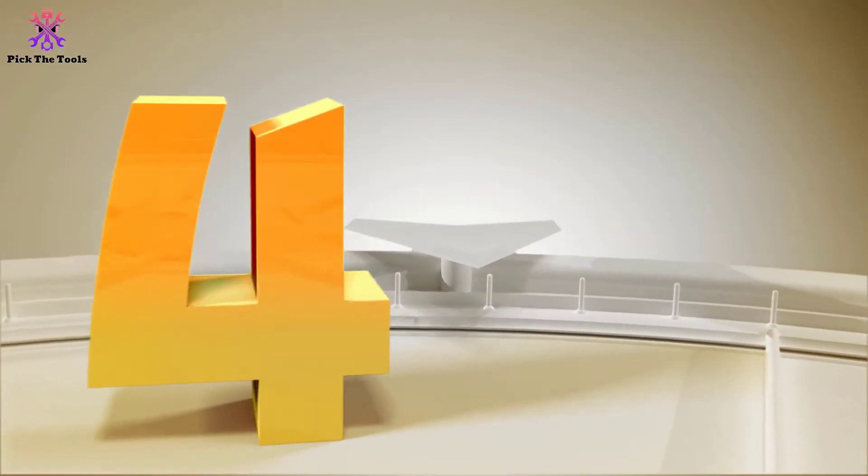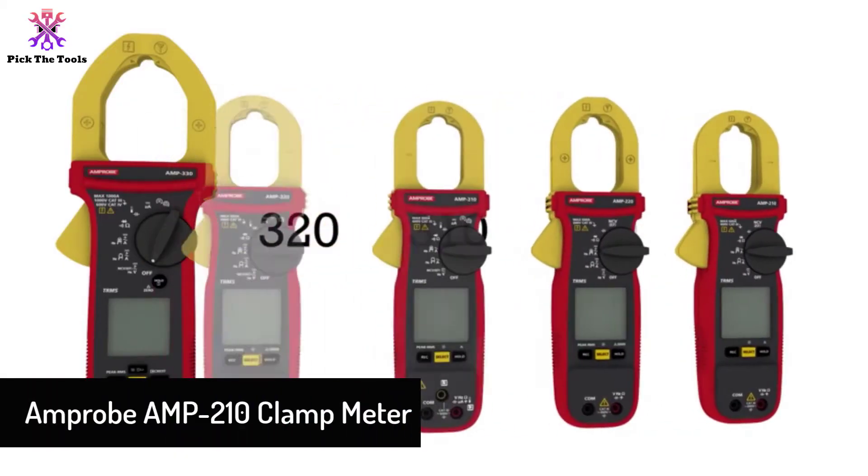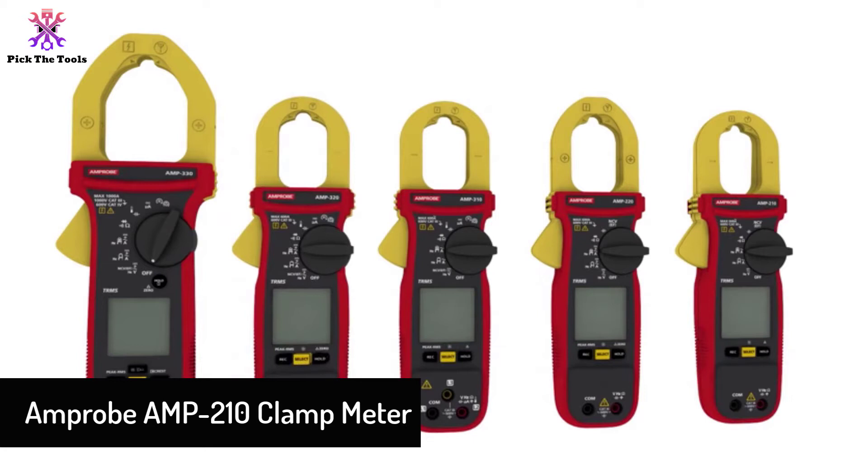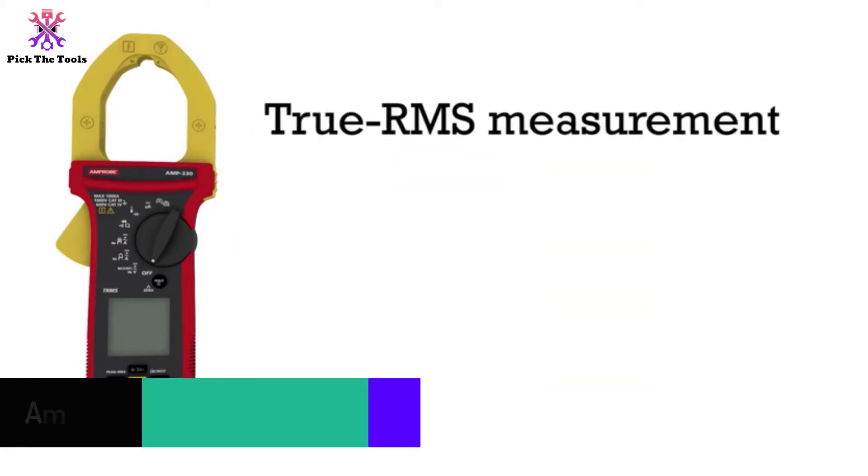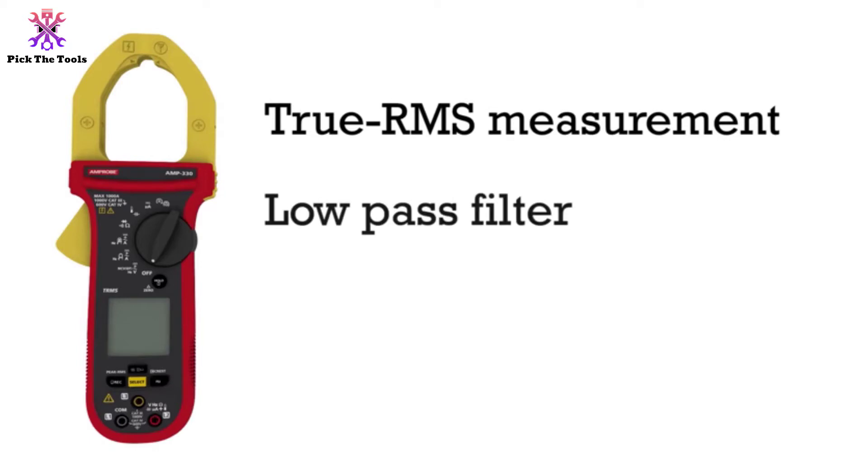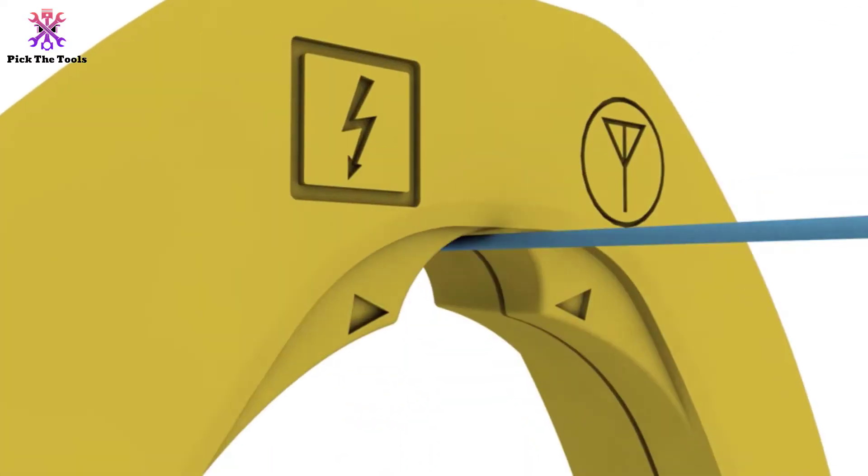Moving on, at number four we have the Amprobe AMP 210 clamp meter. If you have an old clamp meter and want to replace it with a new one, the best choice would be the Amprobe AMP 210 clamp meter. It has better improvement among other Amprobe clamp meters, and you should consider the excellent quality of this Amprobe AMP 210.